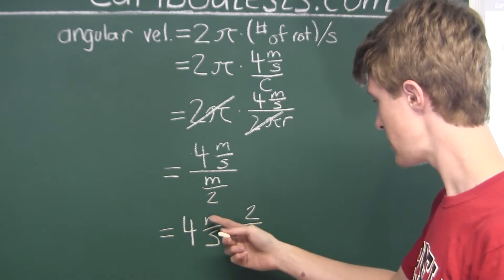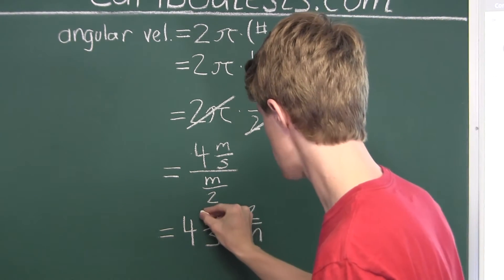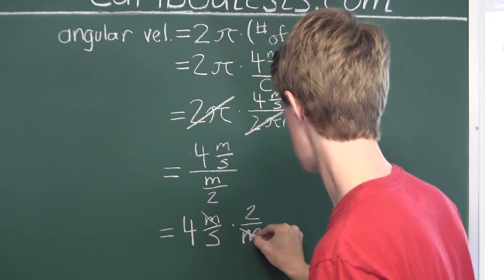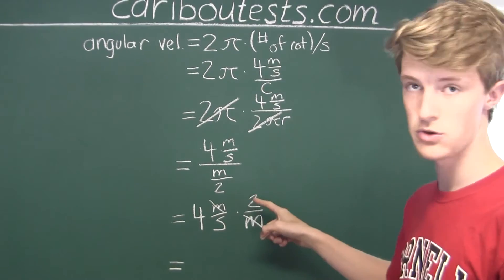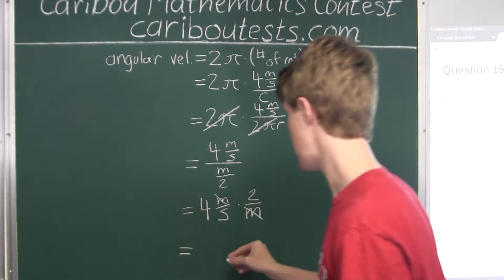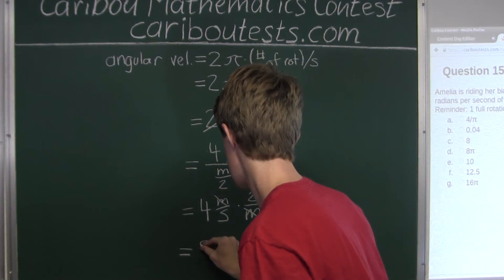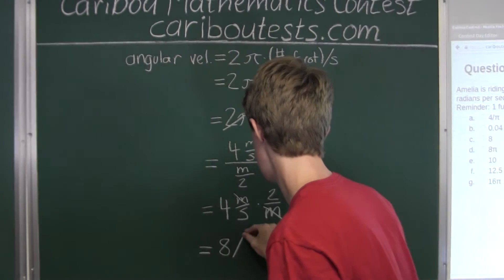Well, we have an m in the numerator and the denominator. So, those will cancel out. And then, finally, what we are left with is 4 times 2 in the numerator divided by s. So, we have 8 per s.